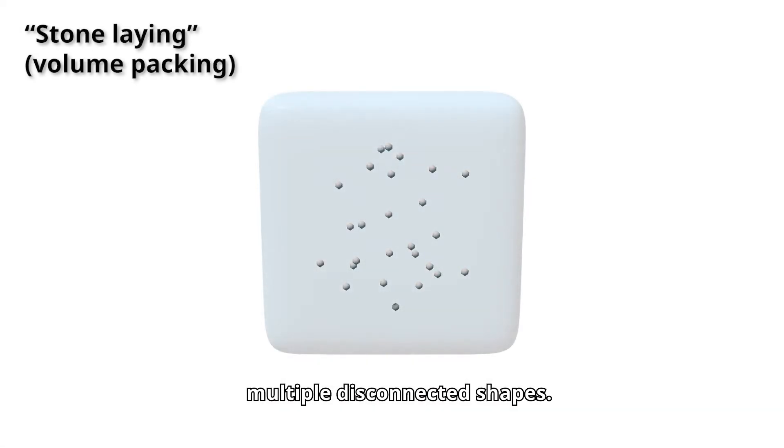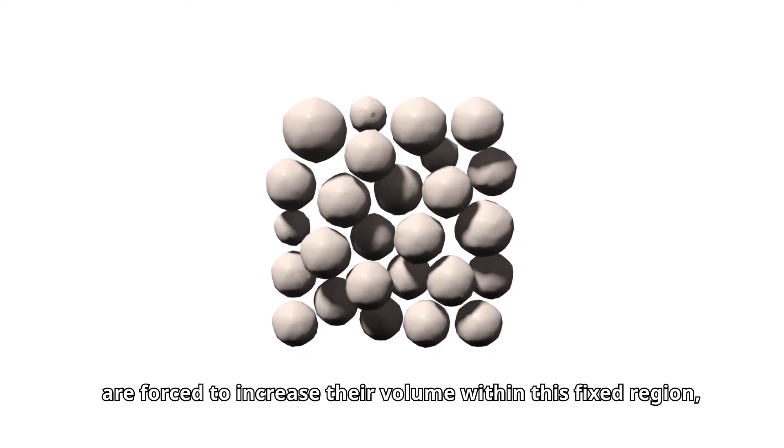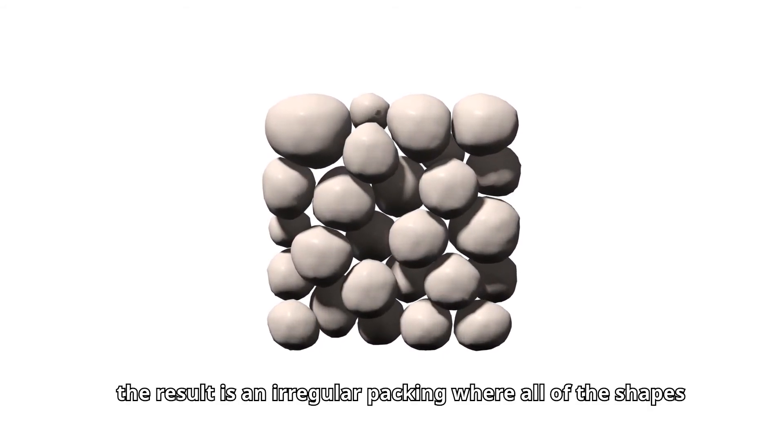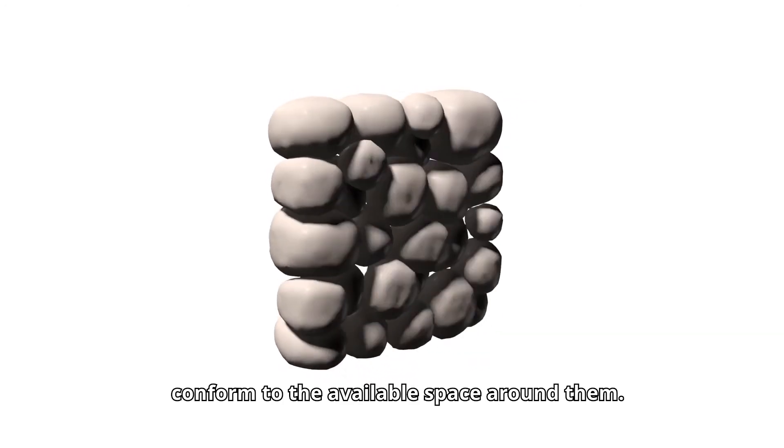The same can be done with multiple disconnected shapes. If all of these initially small spheres are forced to increase their volume within this fixed region, the result is an irregular packing where all of the shapes conform to the available space around them.